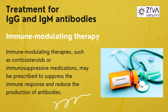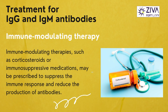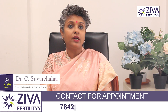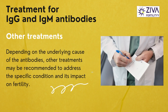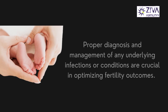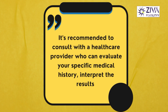Then there is autoimmune modulating therapy. During conditions involving IgG and IgM, called immune-mediated conditions, such as autoimmune diseases where the immune system starts to attack the body's own tissue, immune-modulating therapies such as corticosteroids or immunosuppressants can suppress the immune system and stop it from attacking the body itself. These medications can reduce the impact of these antibodies, but they must be used under the guidance of an experienced healthcare provider, physician, or fertility specialist, as they have side effects and require monitoring.